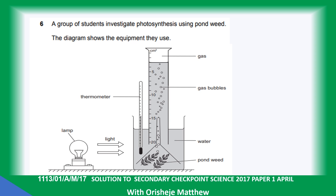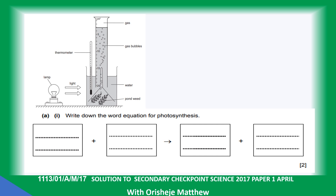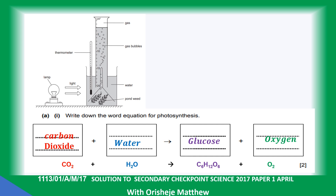Question six: a group of students investigate photosynthesis using pond weed. The equipment includes a light source, thermometer, measuring cylinder, funnel, pond weed, and water. Bubbles of oxygen are collected in the measuring cylinder. The word equation for photosynthesis is: carbon dioxide plus water produces glucose and oxygen. In chemical symbols: CO₂ + H₂O → C₆H₁₂O₆ + O₂.